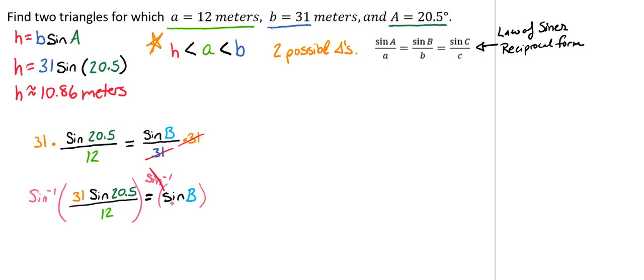So doing that allows us to isolate the measure of angle B. So the measure of angle B is going to equal the inverse of sine of 31 times the sine of 20.5, all divided by 12, which is going to come out to approximately 64.8 degrees. But you guys, we need to remember that we have two possible triangles. So really, we have two possible angle Bs as well.